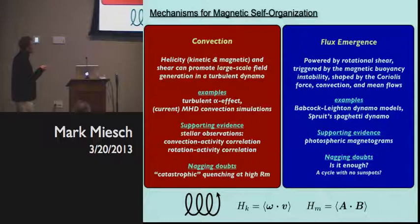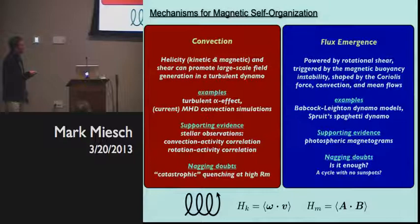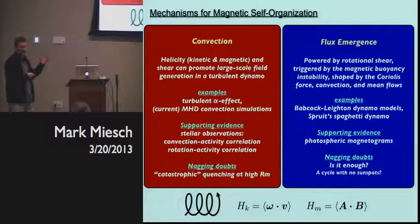The main doubt is the magnetic Reynolds number, which quantifies in the magnetic induction equation of MHD the relative importance of the advection term to the diffusion term. In stars, this is at least 10 to the 7th to 10 to the 10th. In simulations, it's more like 10 to the 2nd or 10 to the 3rd. So we're not sure if these simulations are going to operate the same way in real stellar parameter regimes.